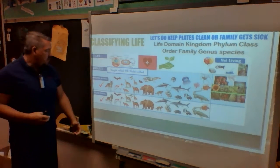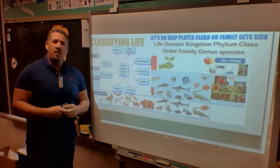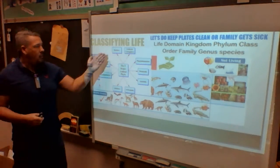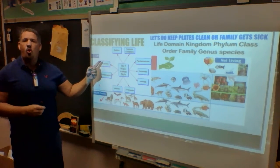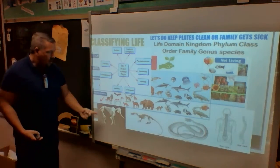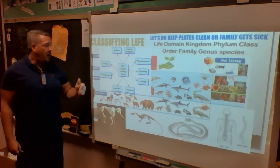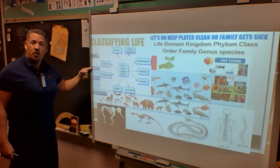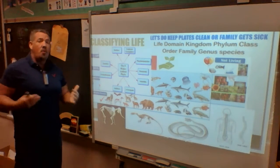Next is phylum. These are categories you'll get into more in 7th, 8th, and 9th grade, but the wolf is a chordata — meaning it has a spinal cord, a backbone. Anything with a backbone is a chordata. You and I are also chordates, so we still match the gray wolf. We're living, more than one cell, eukaryotic, in the animal kingdom, and we have a spinal cord.